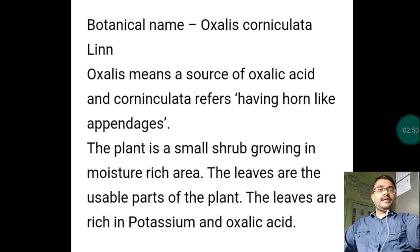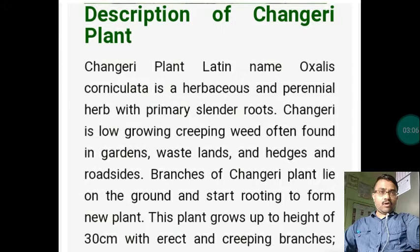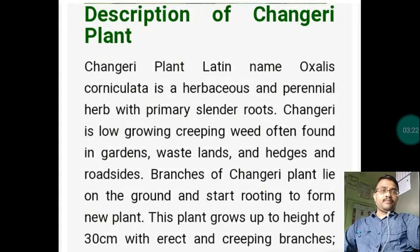The plant is a small shrub growing in moist areas. The leaves are the usable parts of the plant. The leaves are rich in potassium as well as oxalic acid. The morphology of the Changeri plant — Oxalis Corniculata is a herbaceous and perennial herb with primary slender roots. Changeri is a low-growing, creeping weed often found in gardens, wastelands, in hedges and roadsides.